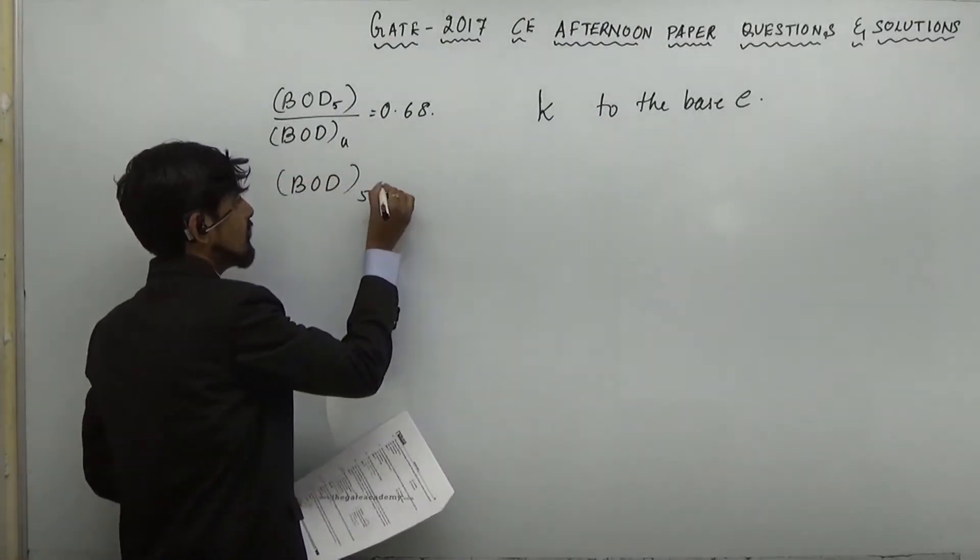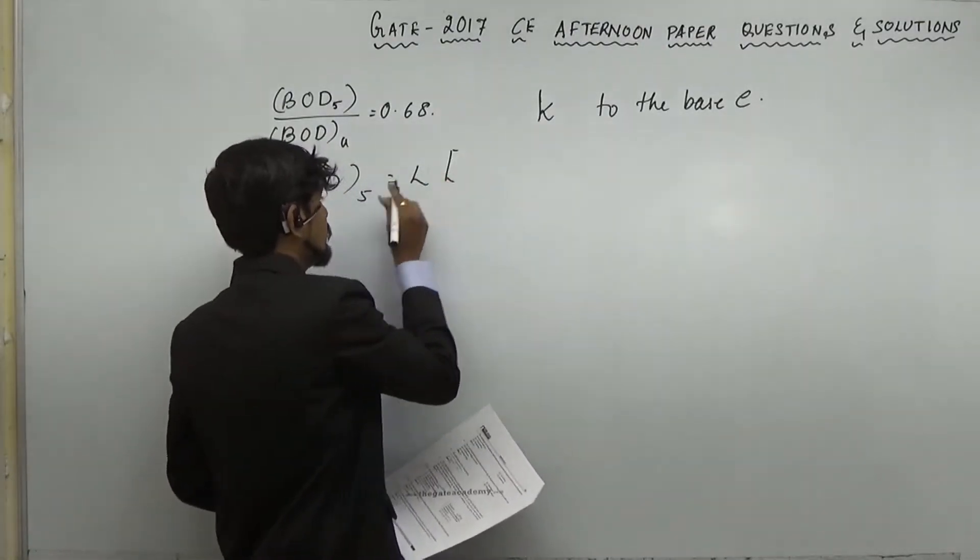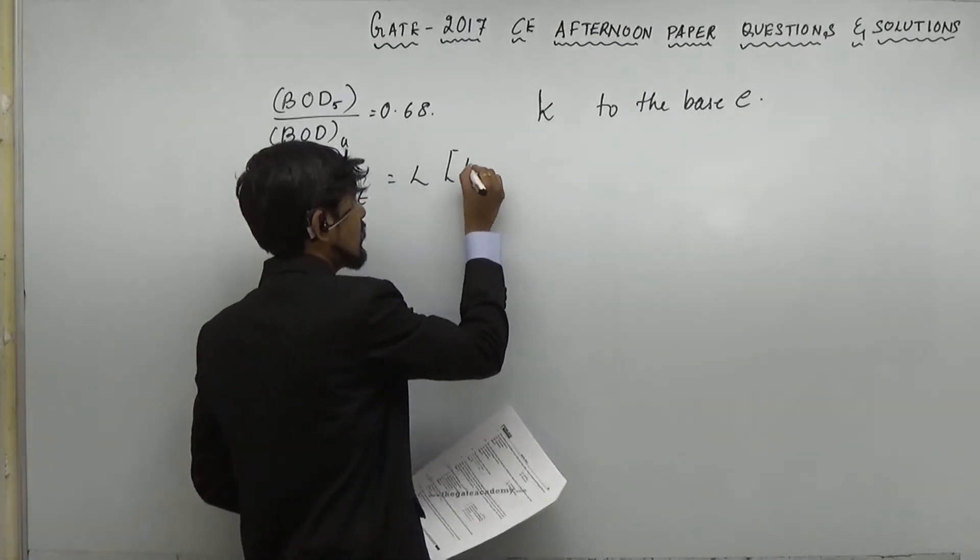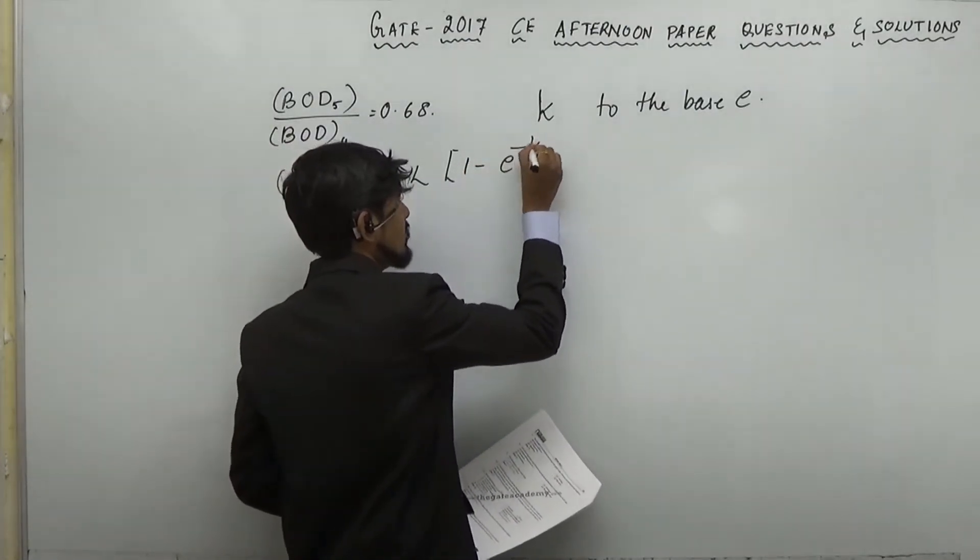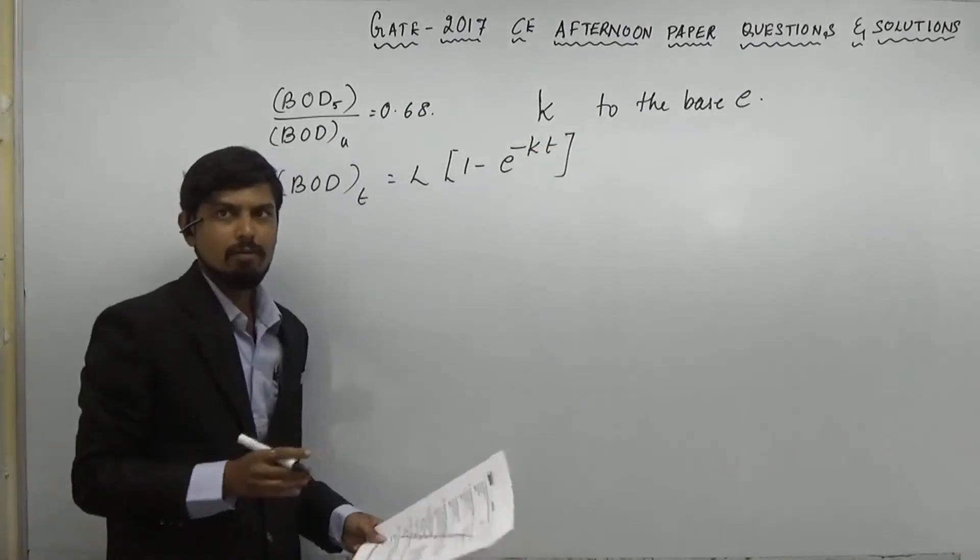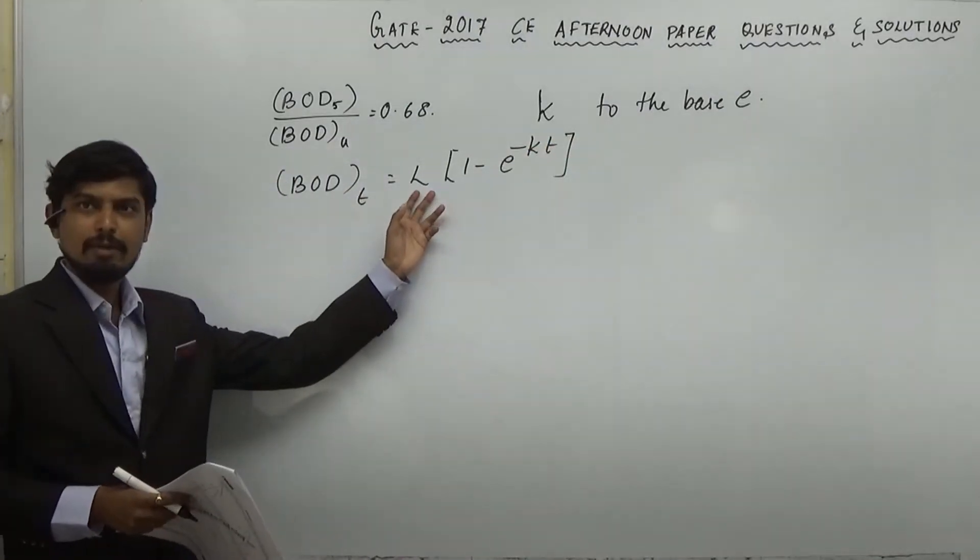We know that BOD at any time T is equal to L into bracket 1 minus E to the power minus KT. This is the formula. L is nothing but ultimate BOD.